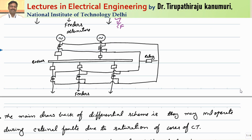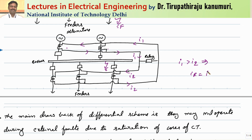Now let us take the case of internal faults. If some fault happens on the busbar, the current supplied will be greater than the current taken out from the outgoing lines. Analyzing the currents: the net sum of currents from the outgoing CTs I represent as I2, and the current supplied from the source I represent as I1. Whenever the fault happens, the value of I1 is greater than I2, so the current passing through your relay will be I1 minus I2, which is non-zero, and your relay will operate.